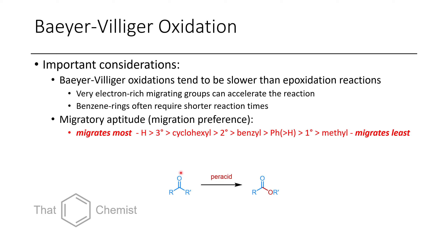The ease of migration determines which R-group forms the ester bond. So if you take a terminal aliphatic aldehyde, it should be converted to a carboxylic acid. However, if you have a benzaldehyde, instead of having the hydride shift to the oxygen, the benzene ring will shift to the ester. I'll show some examples of that as we look through actual examples of this reaction.